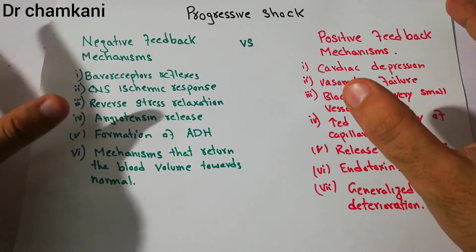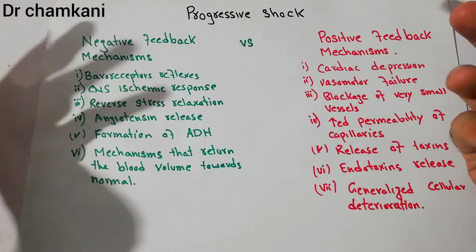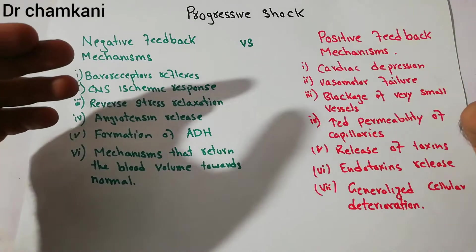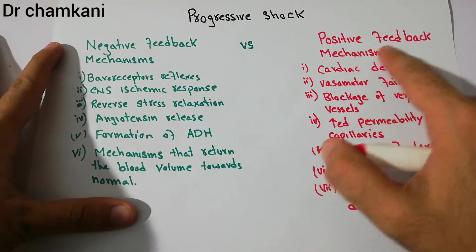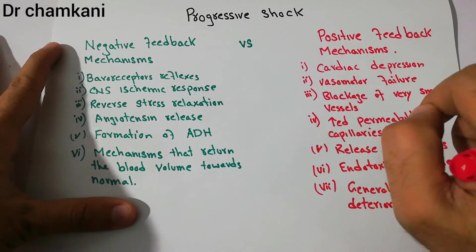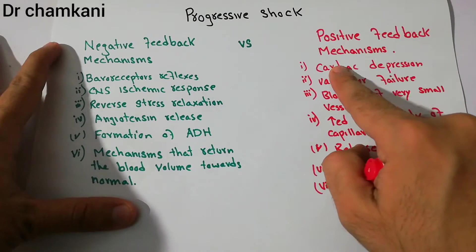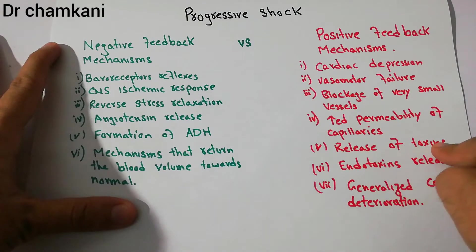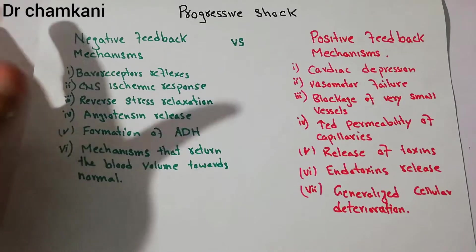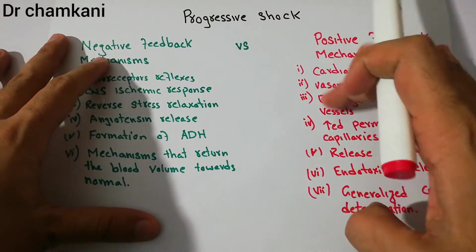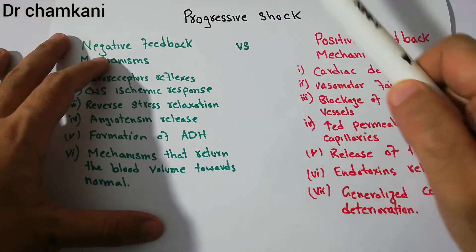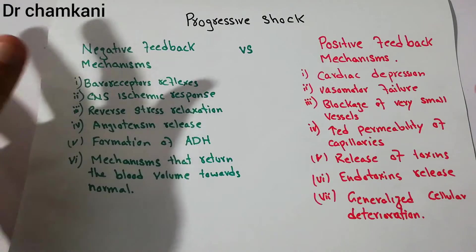So far in progressive shock we have discussed that there are a lot of factors which keep on progressing or increasing the severity of the shock — basically shock breeding more shock. These positive feedback mechanisms lead to a vicious circle, and they include cardiac depression, failure of the vasomotor center, blockage of very small vessels, increased permeability of the capillaries, release of toxins from the tissues, release of endotoxins from bacteria, and generalized cellular deterioration from failure of the sodium-potassium pump. These factors increase the severity of progressive shock, which is the second stage of shock, after which comes the irreversible stage.